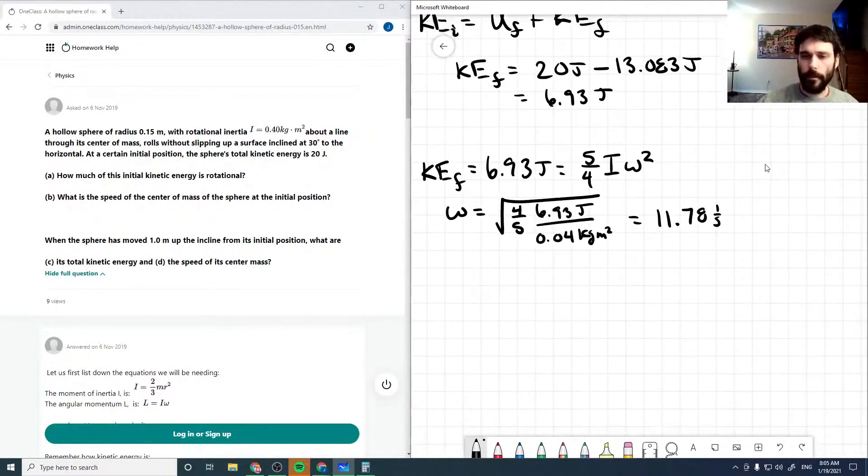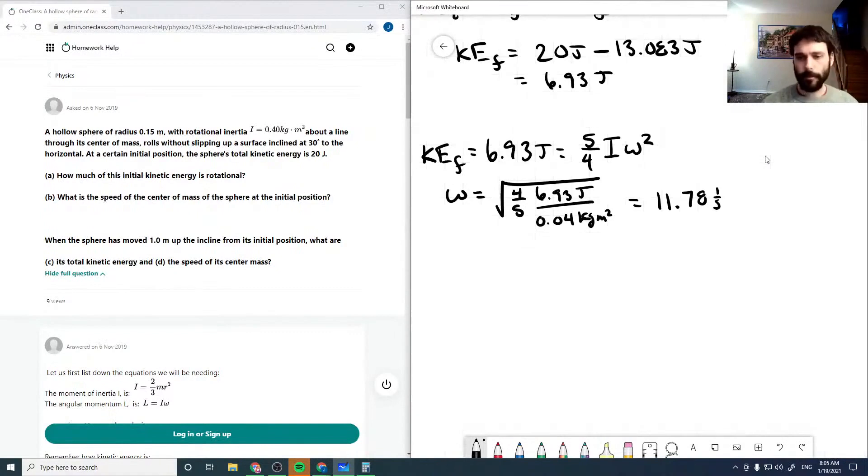And then we can get our velocity, our tangent velocity, which is also our center of mass velocity, as omega r, which is 11.78 per seconds times our radius, which is 1.766 meters per second.